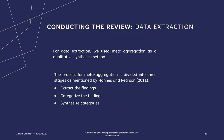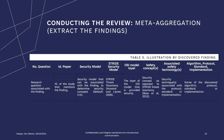For data extraction, metaggregation was used as a qualitative synthesis method. We used this method as it makes it possible to synthesize through aggregating findings into categories, facilitating the grouping of findings according to common attributes or properties. The metaggregation process is divided into three stages, as mentioned by Hannes and Person: extract the findings, categorize the findings, and synthesize the categories. In the first stage of metaggregation, the findings of the selected studies were extracted, and each finding was classified in a table with the following associated properties.